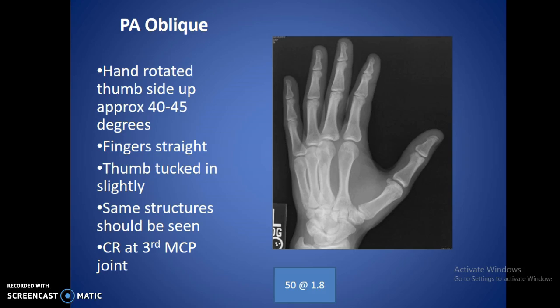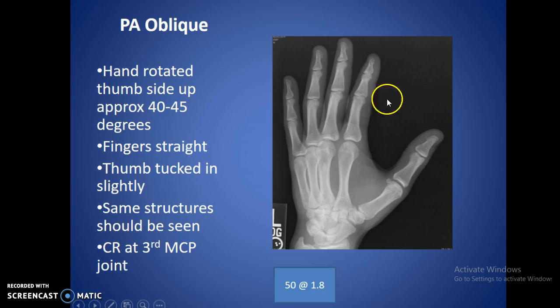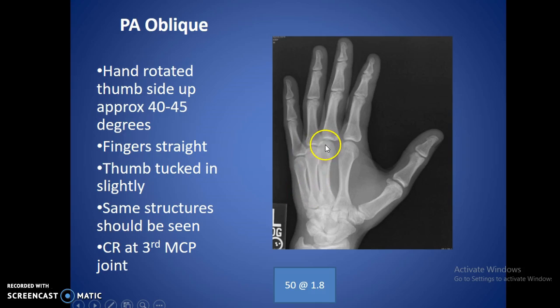For the PA oblique, just rotate the hand up about 40 to 45 degrees — it's going to raise the thumb side up. Fingers should be straight. The book does talk about the fingers being bent, but we want to keep the distal interphalangeal joint spaces open as well as the intermediate phalangeal joint spaces open. If you rest those fingers down, you're not going to be able to see the spaces and you'll foreshorten those bones. So keep your fingers straight out. Just tuck the thumb in slightly, bringing it a little closer to the second finger. CR is going to be at the third MCP joint. You can tell it's obliquing because you're getting a little bit of overlap between those three bones.